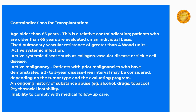Contraindications for transplantation include age older than 65 years — this is a relative contraindication, as patients older than 65 years are evaluated on an individual basis — and fixed pulmonary vascular resistance of greater than 4 units.